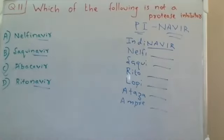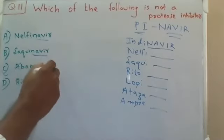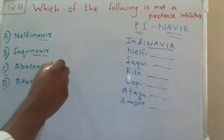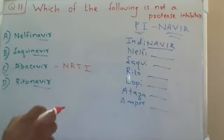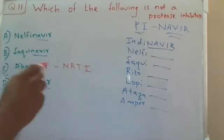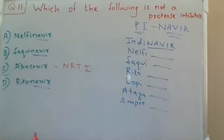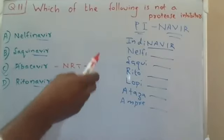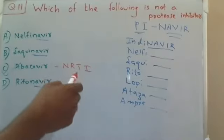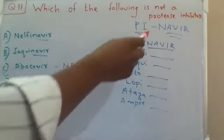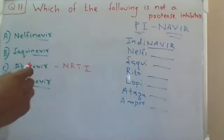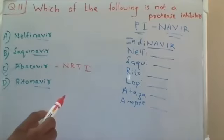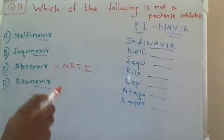Abacavir belongs to the NRTI — nucleoside reverse transcriptase inhibitor — category. As mentioned, there are four major classes: NRTI, NNRTI, protease inhibitors, and integrase inhibitors. The '-navir' drugs belong to protease inhibitors, whereas abacavir belongs to the NRTI category, so it is not a protease inhibitor.